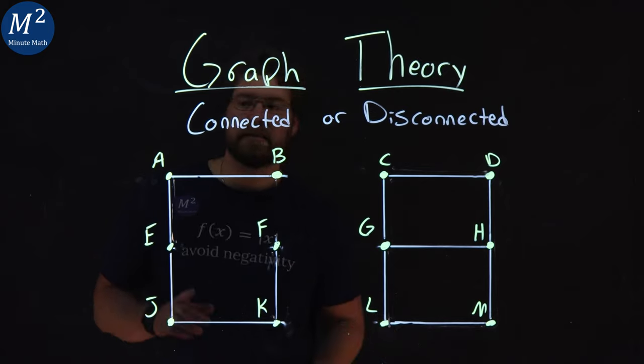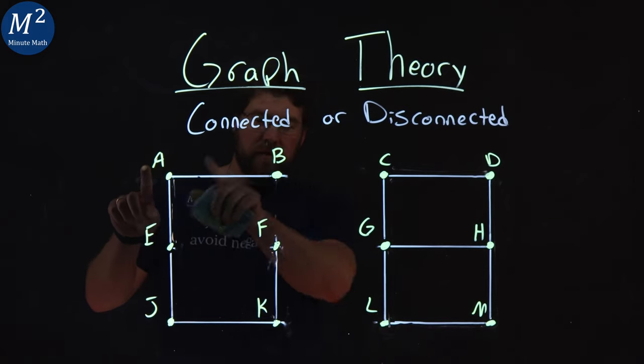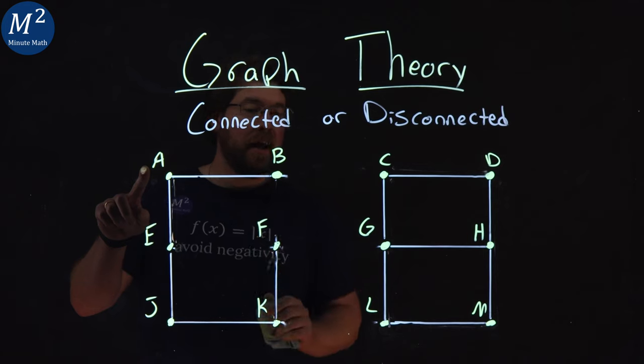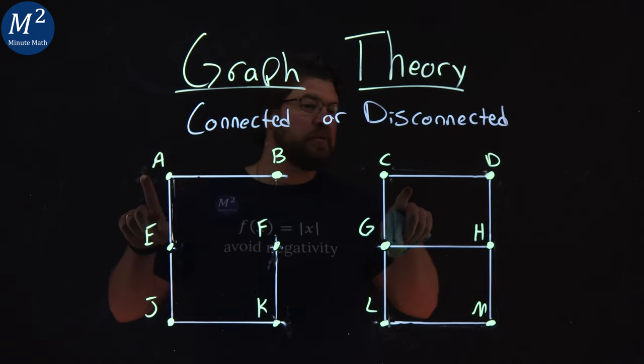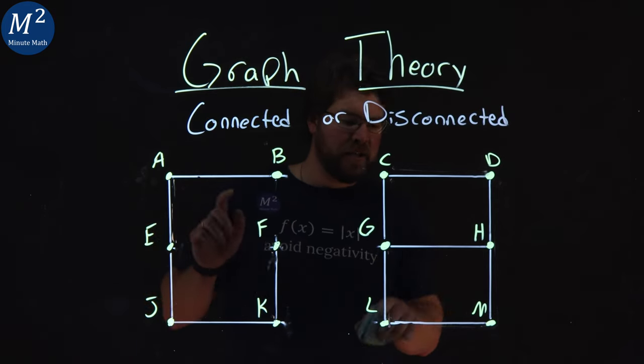But what we can see is A, on this side, I can get to B, E, J, K, and F. But I cannot get to C, D, G, H, L, or M.